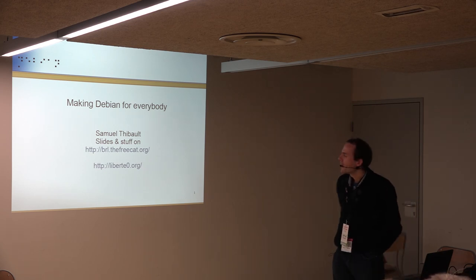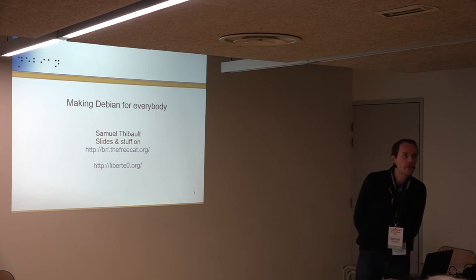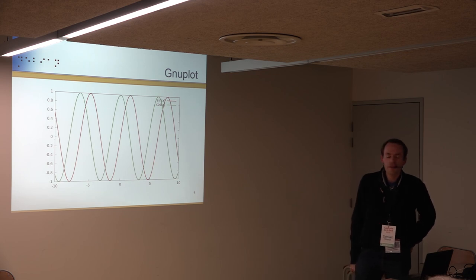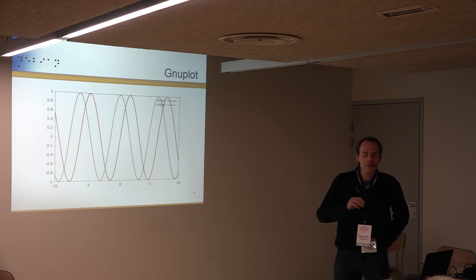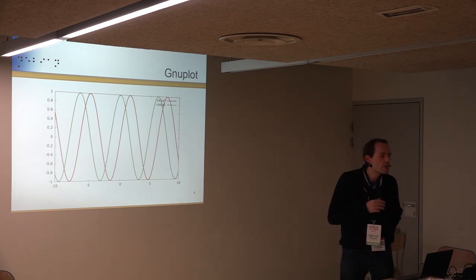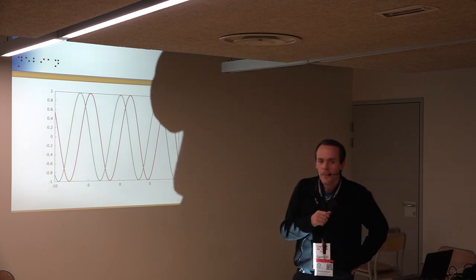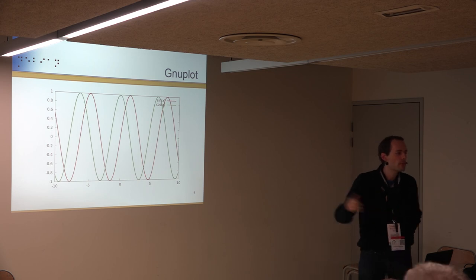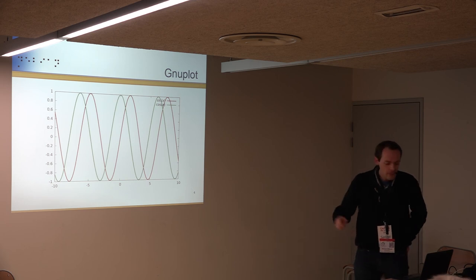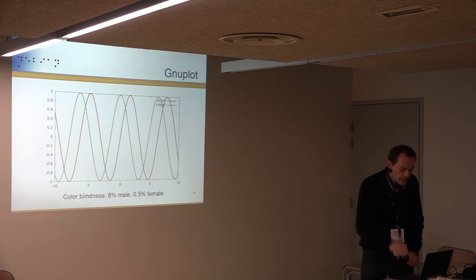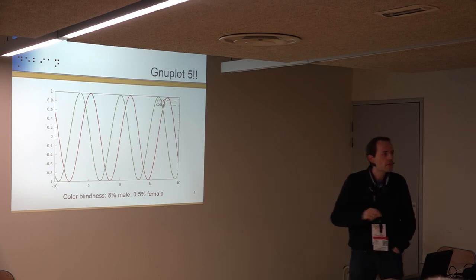Good afternoon everybody. I'll talk about accessibility — making Debian for everybody. I'll give my usual talk about accessibility, so if you've already seen one of my talks you can skip 10 or 15 minutes. Can you tell me what the problem with this is for accessibility? For blind people, for colorblind people — that's one of the problems. There are text versions of Gnuplot, but for colorblind people that's an awful choice of colors, because a lot of people just cannot distinguish between green and red. Gnuplot 5 changed the colors.